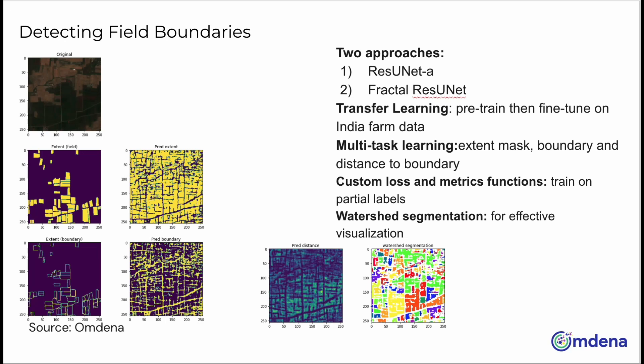The second one uses a fractal ResUnet architecture, which is similar but has fractal ResNet building blocks with tiny model attention layers instead of the Atrous convolution layers. The implementation was in MXNet.